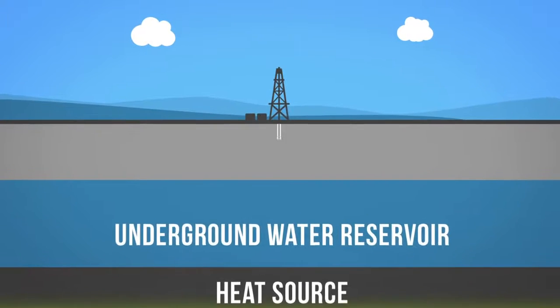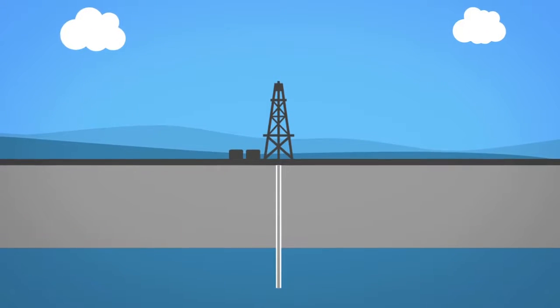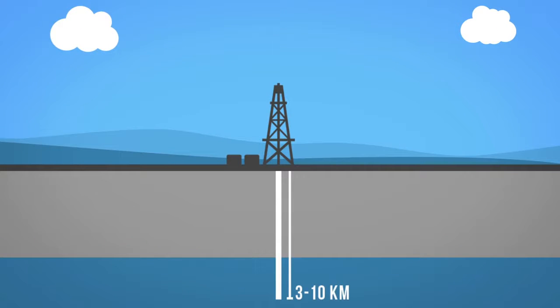Geothermal wells are drilled into the Earth's crust at approximately a depth of 3 to 10 km. The heat is extracted with a variety of methods, but in most cases is drawn from the Earth using water and steam.